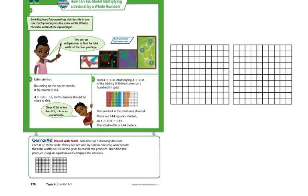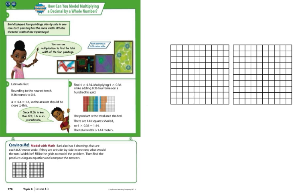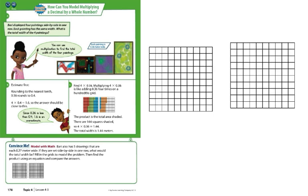So right now we're going to kind of look at how you can model multiplying by a decimal or multiplying a decimal by a whole number. One easy way to do this is honestly to draw a picture, which is why we're focusing on it today. Okay. So you look right here. You have multiple different steps, but we're going to kind of work through this problem that it's showing on this picture here. It says, Bari displayed four paintings side by side in one row. Each painting has the same width. What is the total width of the four paintings? Okay.